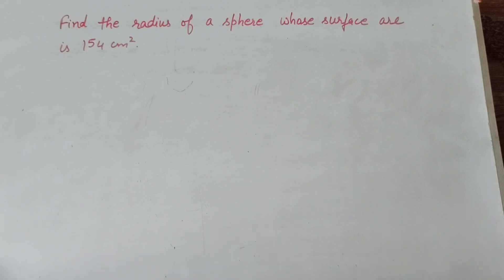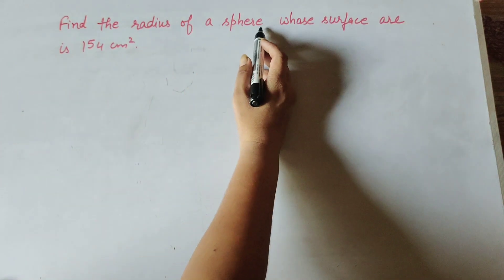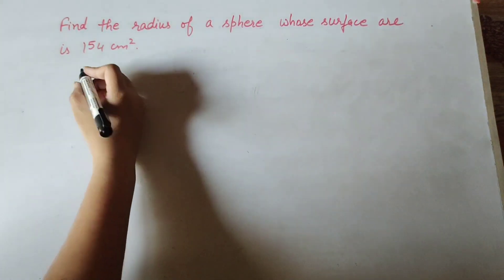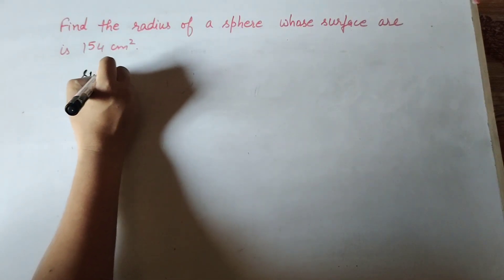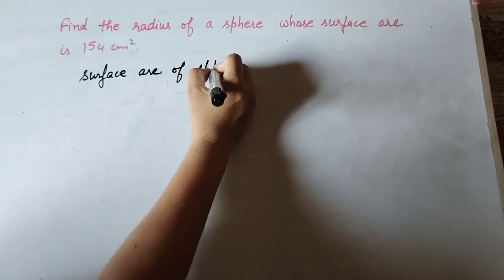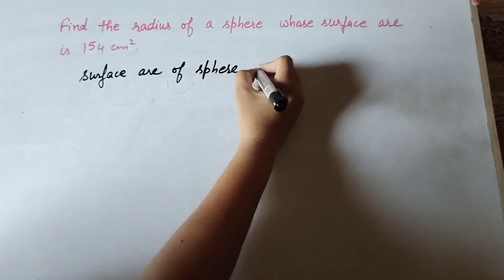Hello friends, welcome to my channel. In this video we will find the radius of a sphere whose surface area is 154 centimeter square. In this question, the given surface area of sphere is